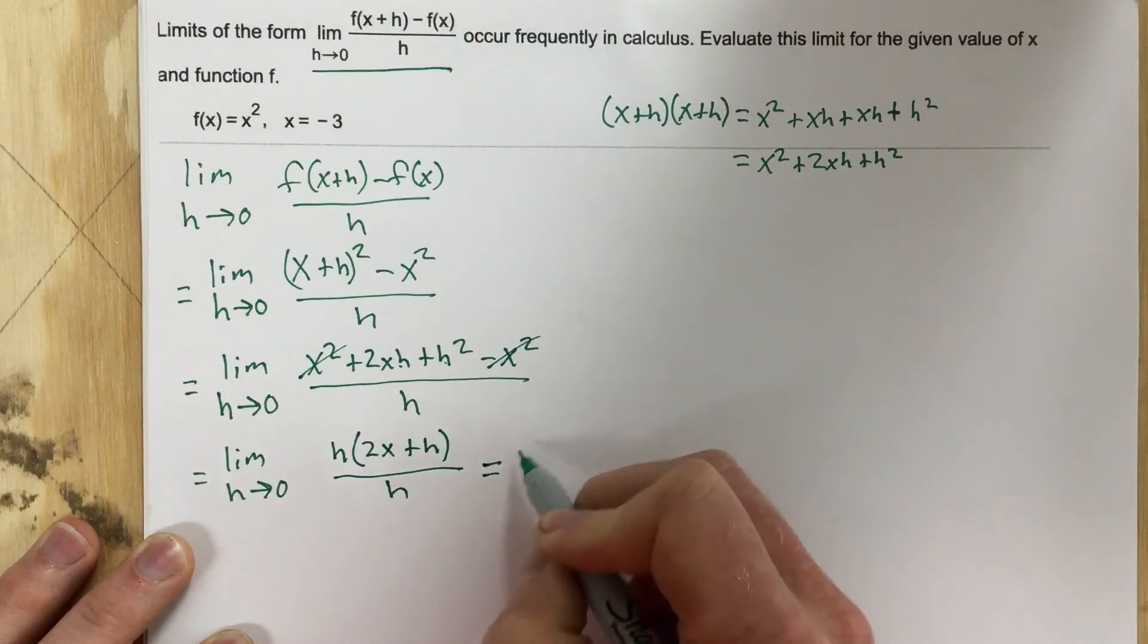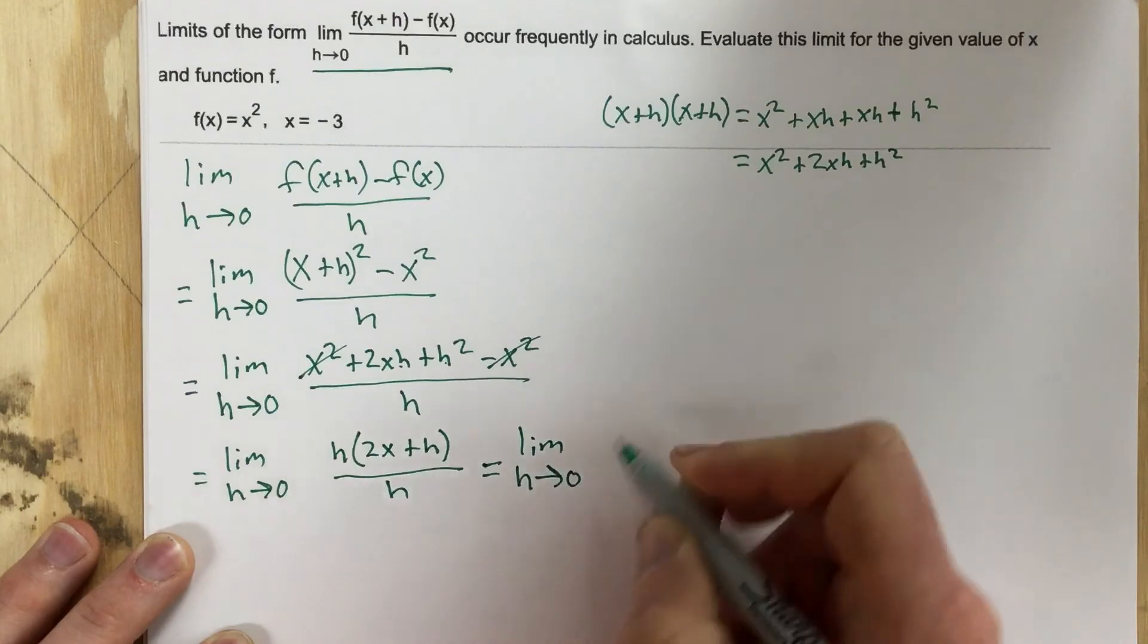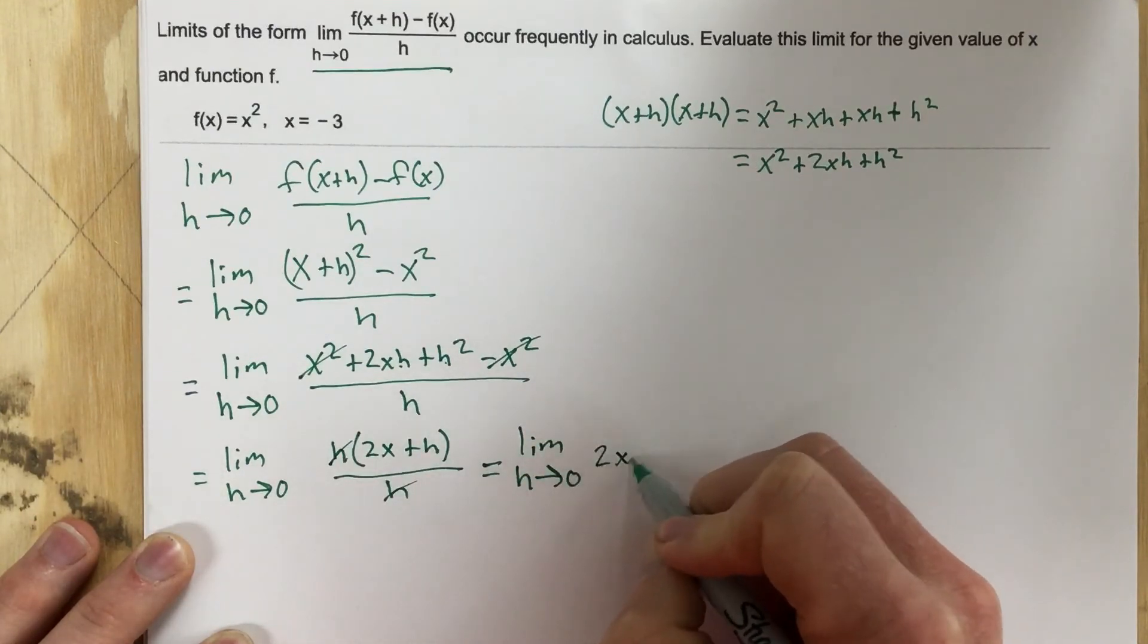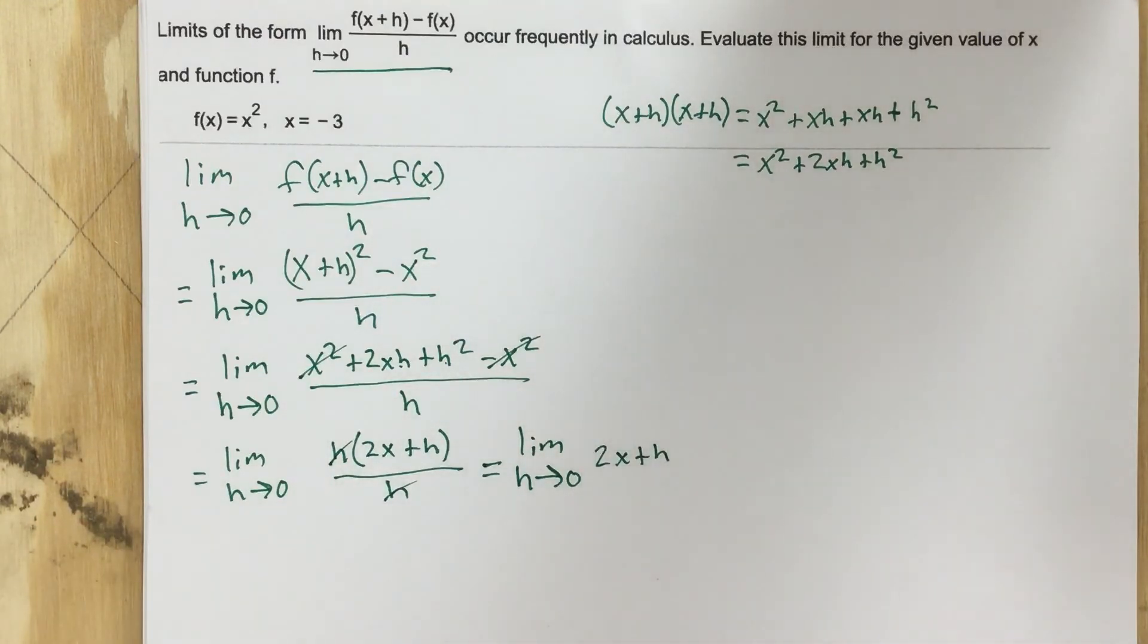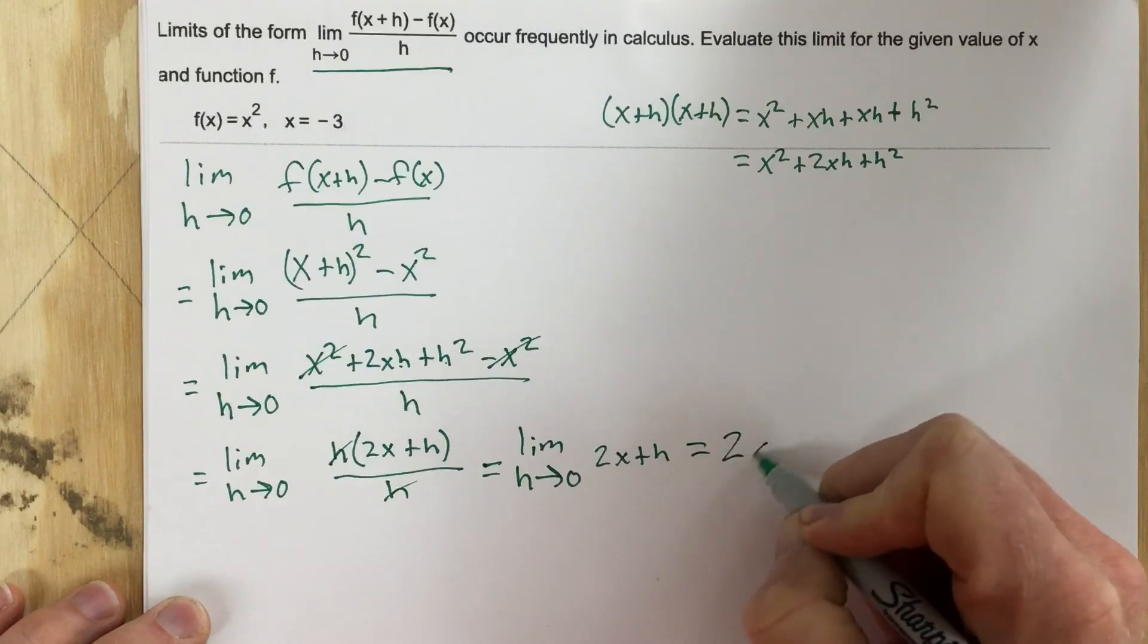The limit as h approaches 0, this h will cancel, and I'm left with 2x plus h. I'm going to plug in 0, and when I get that, I get 2x.